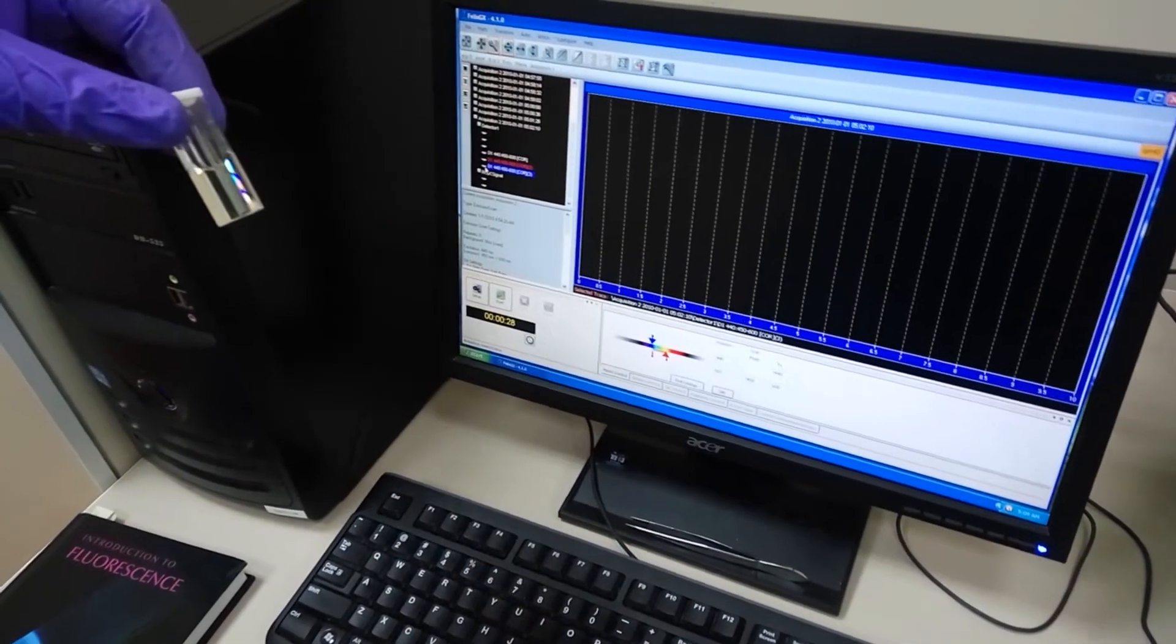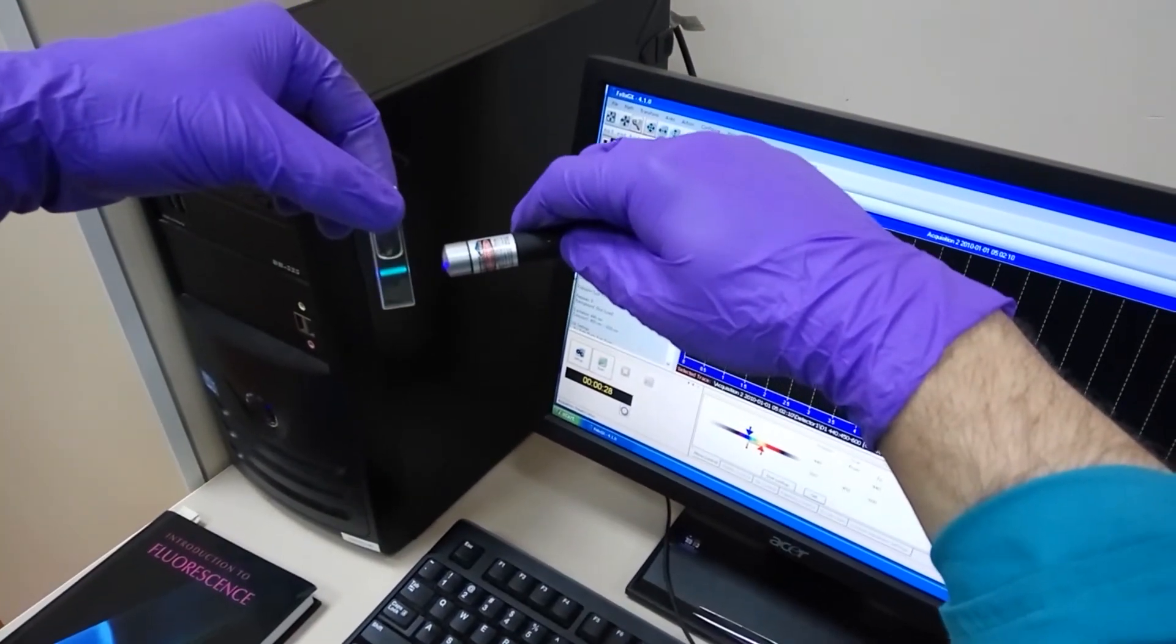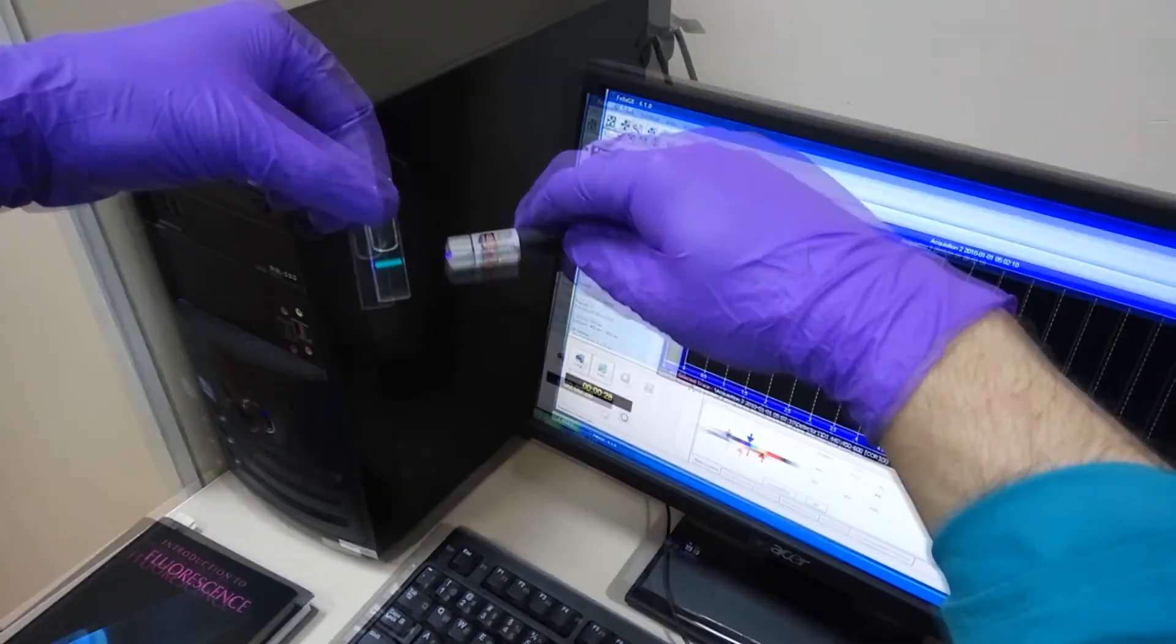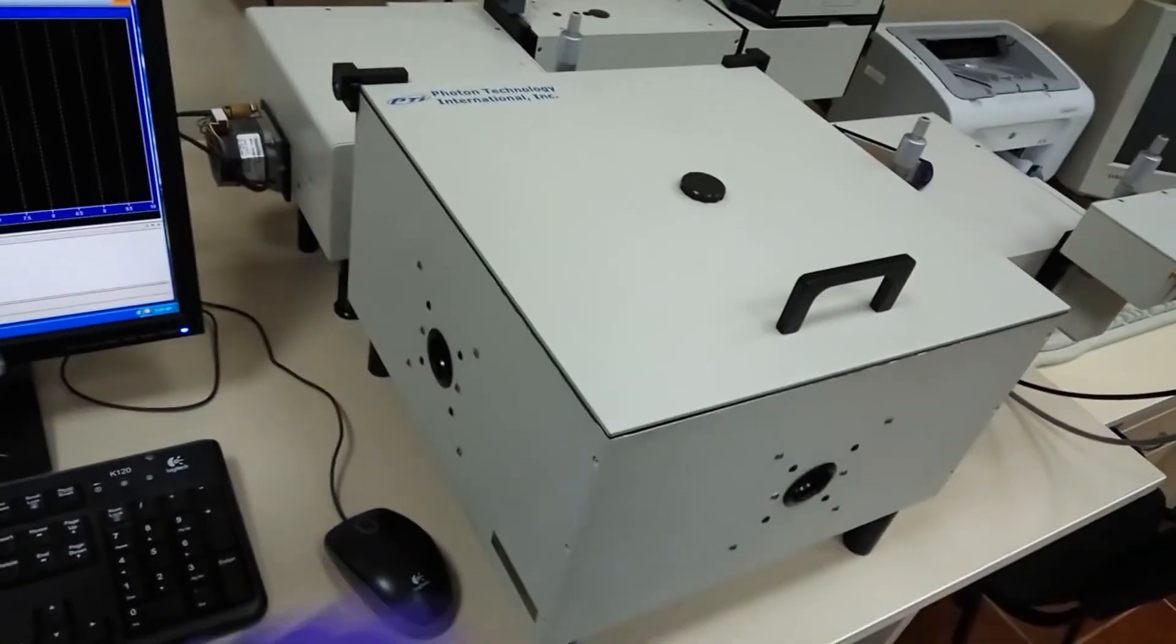Cyanine dyes are unique in forming brightly fluorescent J-aggregates over a broad spectral range, starting from deep blue and stretching to the near-infrared region.